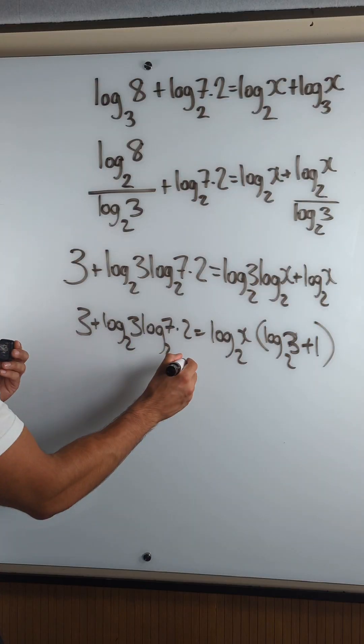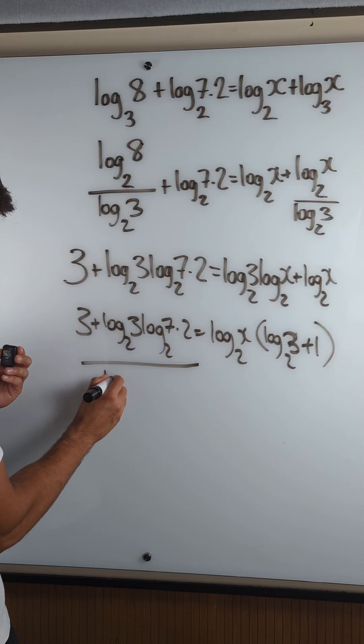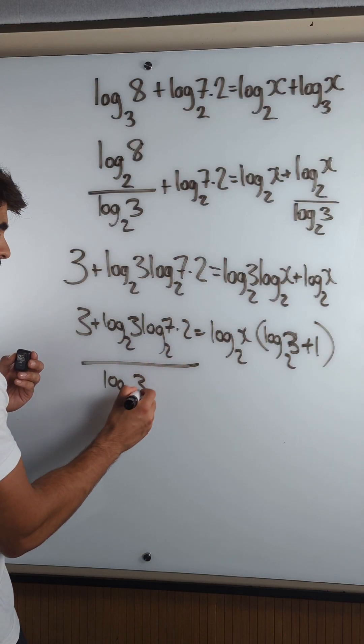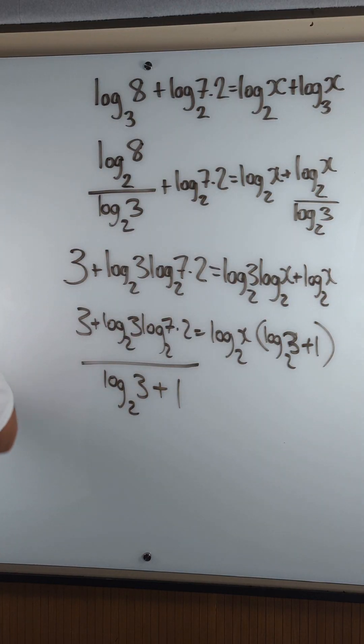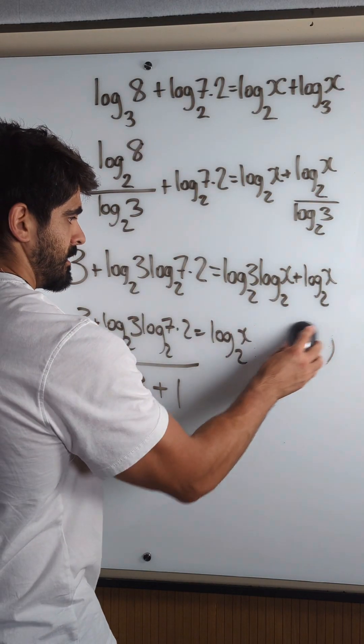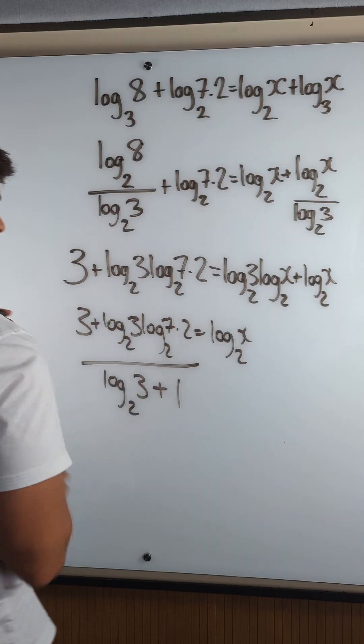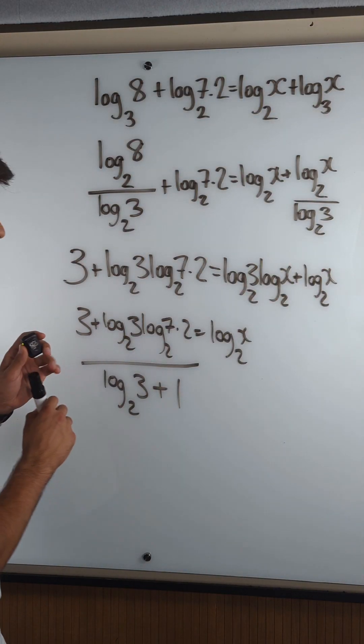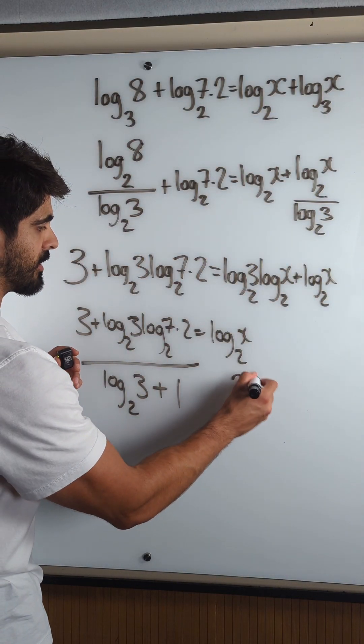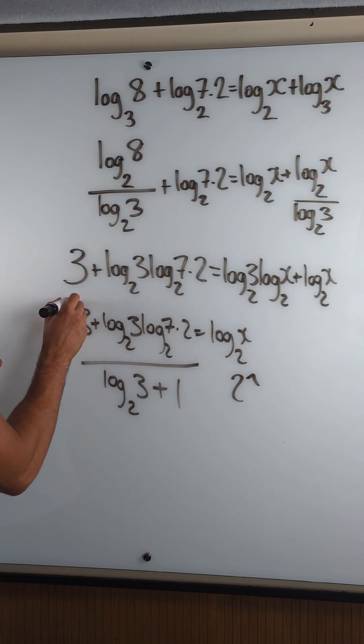Now we're going to divide by that bracket. I'm just going to do it now: log base 2 of 3 plus 1. Okay, then we rearrange for x. So that's log base 2. What's the opposite of log base 2? It's 2 to the power of. So you're literally going to do 2 to the power of this whole thing.